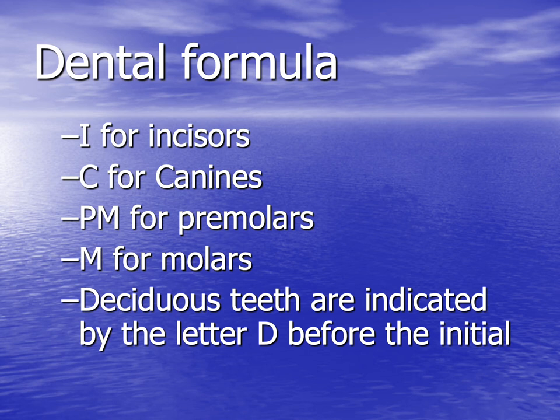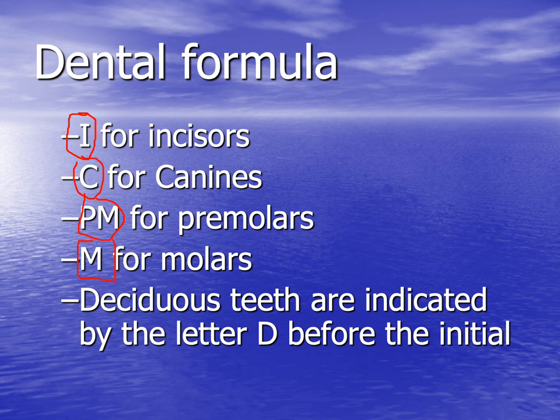We use a dental formula to describe the number and class of teeth found in the oral cavity of different species. For this formula we use numbers and letters. Incisors are described by the letter I, canines with the letter C, premolars with PM, and molars with M. If there is a deciduous dentition, like in humans, we use the letter D before any of these letters.